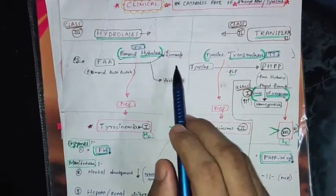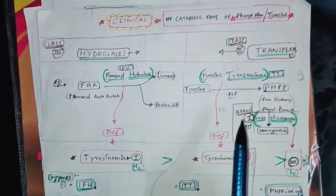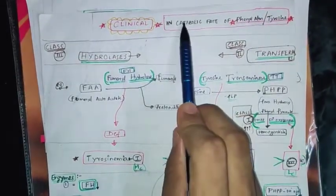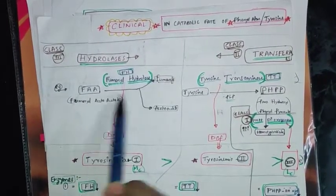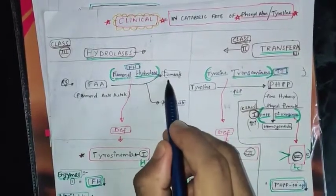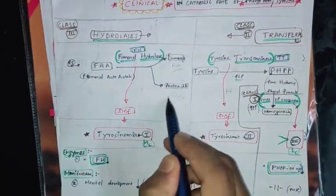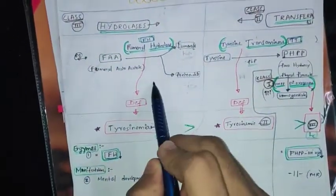Let me review enzyme classes: Class 3 is hydrolase, Class 2 is transferase, and Class 1 is oxidoreductase. For example, in Class 3, the hydrolase reaction takes place in tyrosine catabolic fate. If you know tyrosine metabolism, you can remember these reactions — fumarylacetoacetate converting into fumarate and acetoacetate. That is the ketogenic fate and glucogenic fate from tyrosine metabolism, which I already discussed.